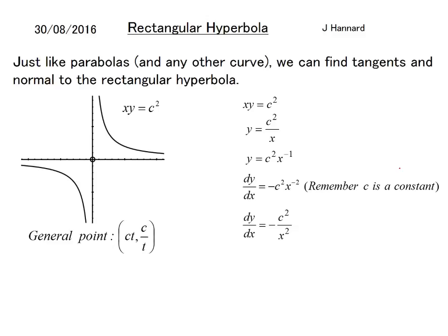Writing that back in normal form it's minus c squared over x squared. Remember that our generic x is ct so you put that in there. Square everybody in the bracket and you get that. And we've got c squared on the top and c squared on the bottom. So there you go and you're just left with minus 1 over t squared and that is the generic gradient for any tangent to any hyperbola.